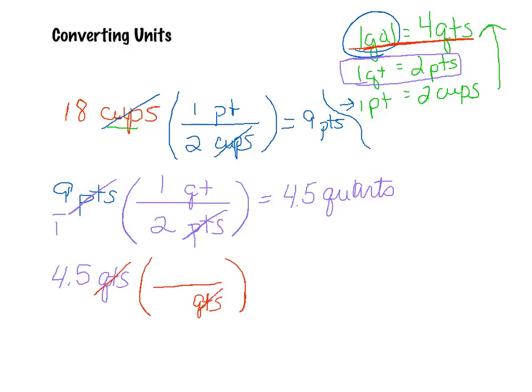so the quarts can cancel out. So, I have 4.5 quarts times one gallon over four quarts, because one gallon is equal to four quarts. So, in dividing this, I'm going to get, basically, 1.25 gallons of milk are going to be needed to give me 18 cups.